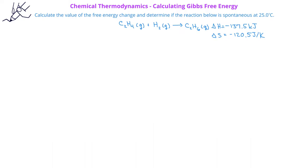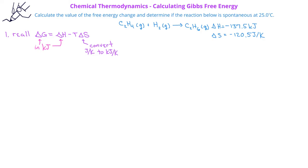We begin by recalling that the change in free energy can be found by taking the enthalpy change for the reaction and subtracting the Kelvin temperature times the entropy change: ΔG = ΔH − TΔS. Since the free energy change and enthalpy change will be in kilojoules, we need to convert the entropy change from joules per Kelvin to kilojoules per Kelvin — giving us negative 0.1205 kilojoules per Kelvin.